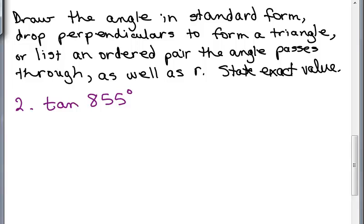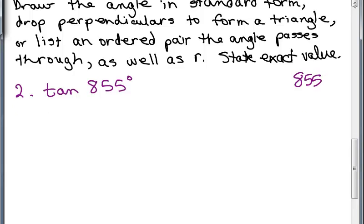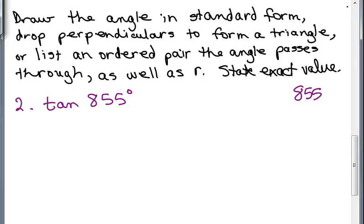Here's our second problem, the tangent of 855 degrees. So we're asked to draw the angle in standard form first. All right, so the way I think of this is, well, it's coterminal with what angle? So 855, you can subtract multiples of 360. So you can subtract 360 or 2 times 360, which I'm going to do, 720. And this would be 135 degrees. So this is coterminal with 135 degrees.